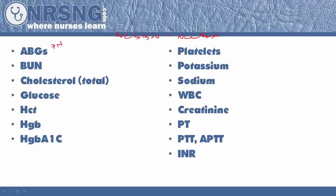For ABG, you need to know pH, CO2, and bicarb. Normal pH is going to be 7.35 to 7.45. CO2 is 35 to 45. Bicarb is 22 to 26. Those are the ABG lab values I want you to know.